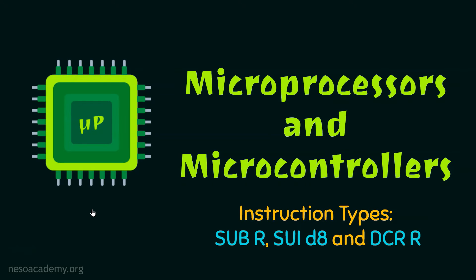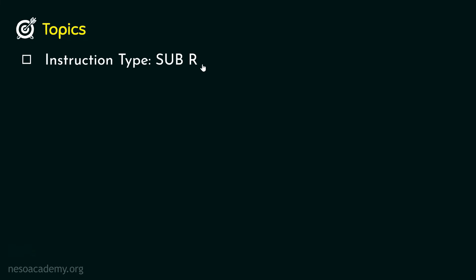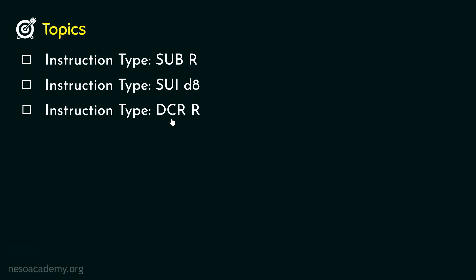Hello everyone and welcome back. Till the previous session we have covered all the addition related arithmetic group of instructions. From this session onwards we will be focusing on the subtraction operation. In this session we are going to learn about the instruction types SUBR, SUI D8, and DCRR. Coming to the topics we will cover: first SUBR, thereafter SUI D8, and finally DCRR.